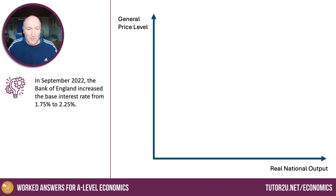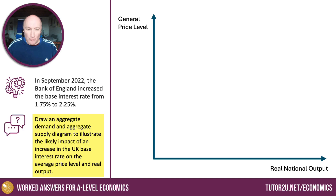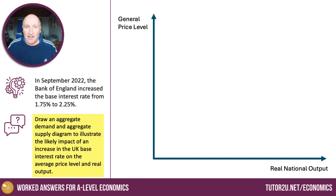This question came up in September 2022. The Bank of England increased interest rates from 1.75% to 2.25% — and of course they've risen to 5.25% in January of 2024. The question asks: draw an aggregate demand and supply diagram to illustrate the likely effect of an increase in UK base rates on the general price level and real GDP or real national output.